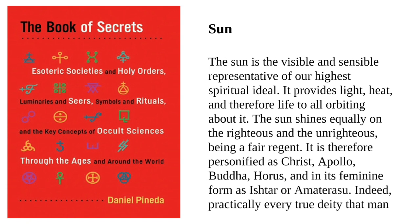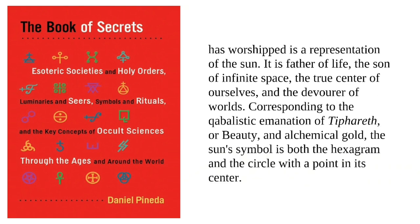Sun. The sun is the visible and sensible representative of our highest spiritual ideal. It provides light, heat, and therefore life to all orbiting about it. The sun shines equally on the righteous and the unrighteous, being a fair regent. It is therefore personified as Christ, Apollo, Buddha, Horus, and in its feminine form as Ishtar or Amaterasu. Indeed, practically every true deity that man has worshipped is a representation of the sun. It is father of life, the son of infinite space, the true centre of ourselves, and the devourer of worlds. Corresponding to the cabalistic emanation of Tiphareth, or beauty, and alchemical gold, the sun's symbol is both the hexagram and the circle with a point in its centre.